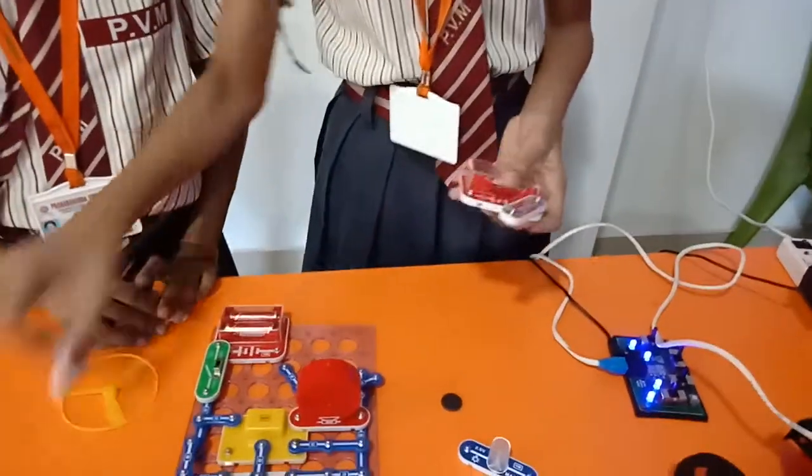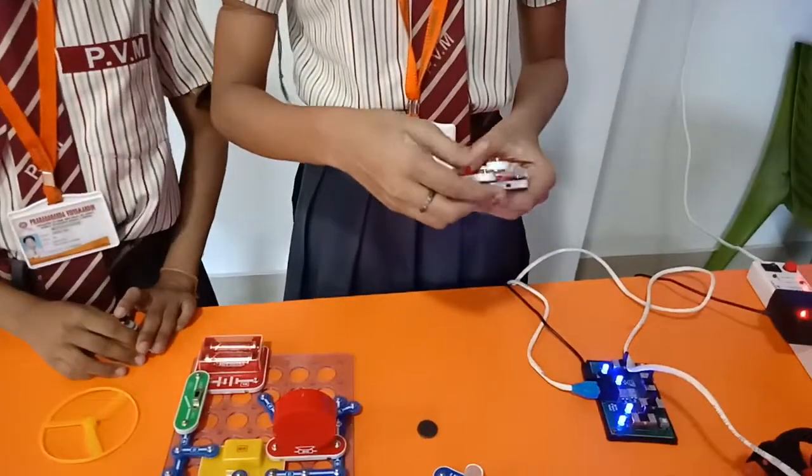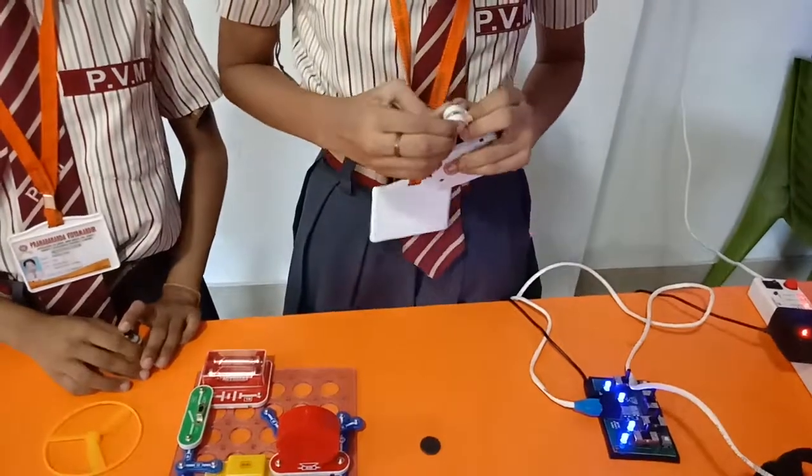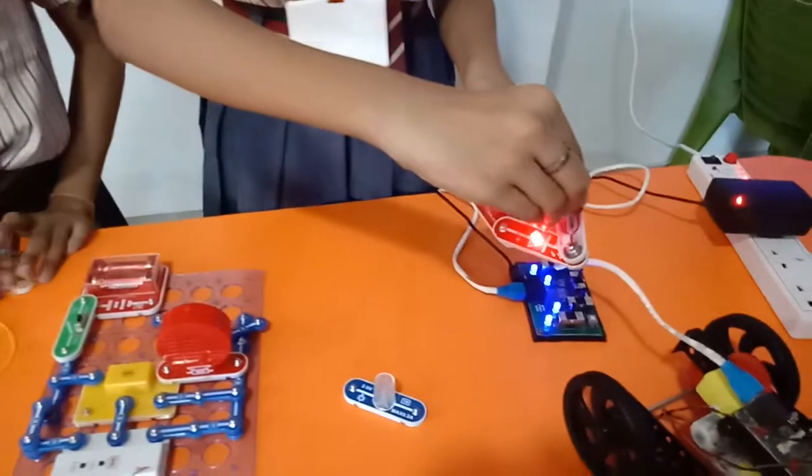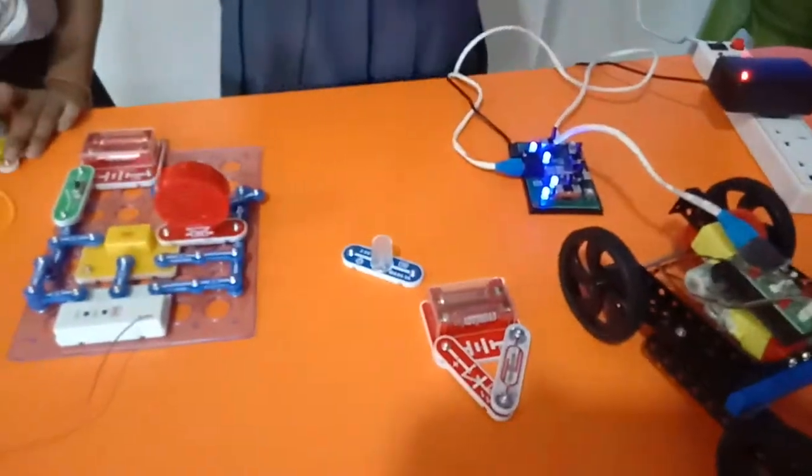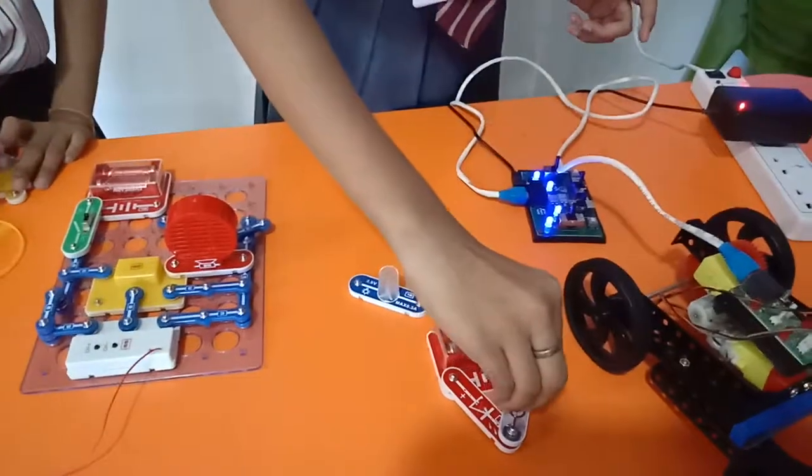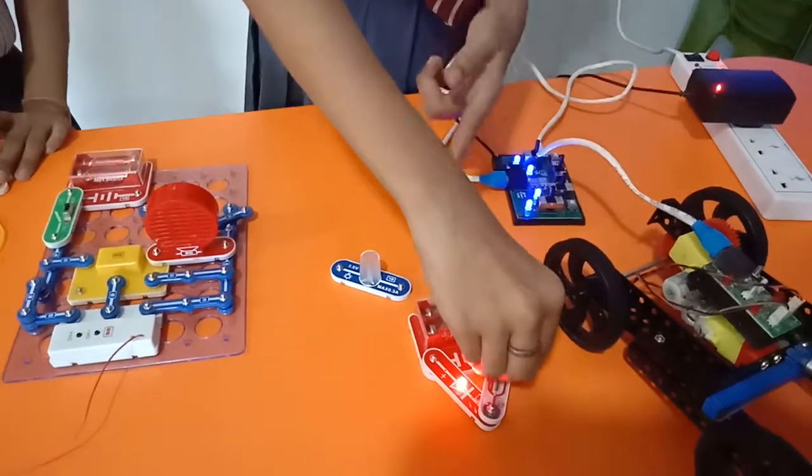When we will attach this mercury and LED light, this is the switch. When we round it, it will start blowing. When we take it out, it will stop. Again we will keep it there, it will start working.